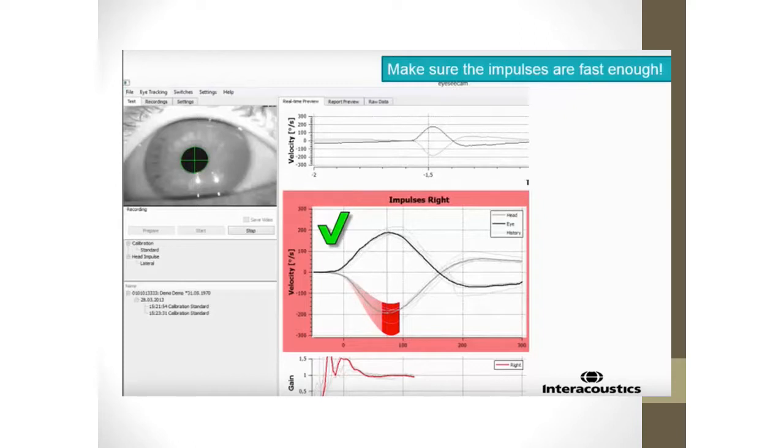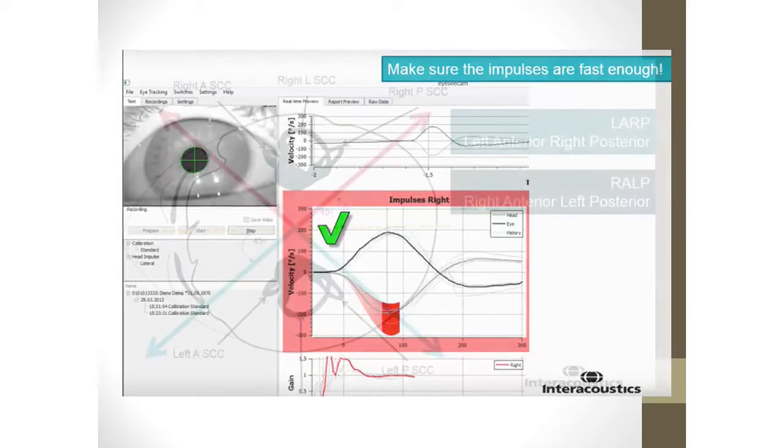And the system records head movement versus eye movement. You expect the eyes to move in an equal and opposite direction via the vestibular ocular reflex. You expect the eye to move in an equal but opposite direction of the head when you do this impulse.